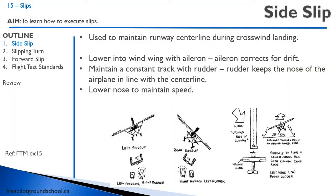We have three types of slips: a side slip, a slipping turn, and a forward slip. The side slip is used to maintain the runway centerline during a crosswind landing. To do this, we lower the into-wind wing with the aileron — the aileron corrects for drift — and we maintain a constant track with the rudder, keeping the nose and the longitudinal axis of the aircraft aligned with the runway centerline. Then we lower the nose to maintain airspeed.